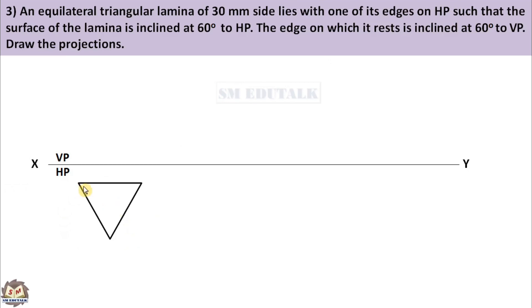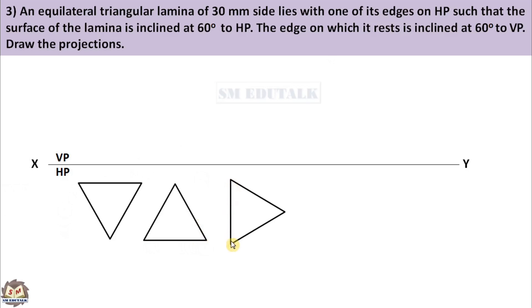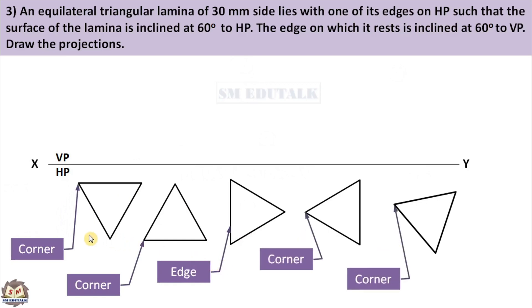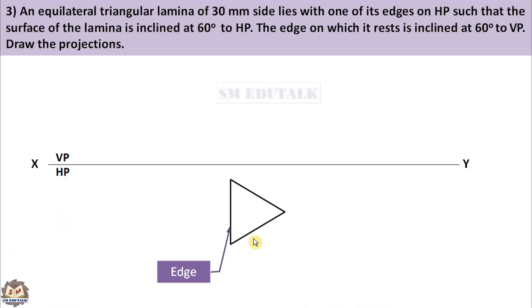This triangle is drawn by keeping its top edge parallel to the XY line. This triangle is drawn by keeping its bottom edge parallel to the XY line. This triangle is drawn by keeping its right edge perpendicular to the XY line. But no edge of this triangle is parallel or perpendicular to the XY line — all edges are kept inclined to XY line. You have to choose any one orientation among these five. It is given that the lamina lies with one of its edges on HP, so find which triangle has the edge on its left. Except the third triangle, all the other triangles have corners on the left. Hence, we select the third triangle to draw.